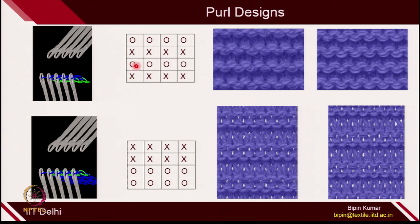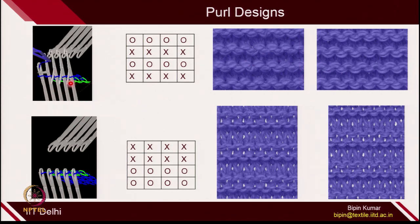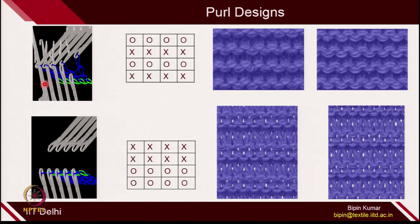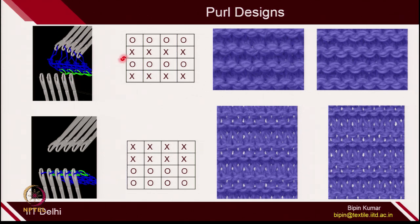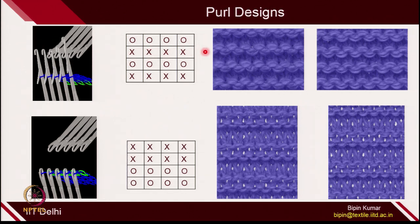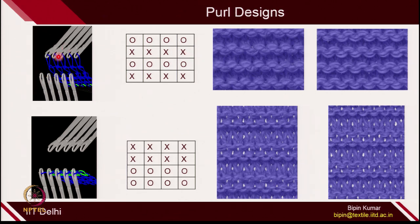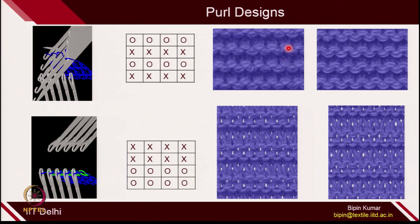In 1×1 pearl: one technical front course, then the next course technical back loops, then front loops, then back loops. So in the same column: front, back, front, back. If you look at the front side and back side, only heads and sinkers will be visible, so the architecture will be the same on both sides. If you see the animation, first this course is created on the front bed, then by loop transfer it is transferred to the back bed, and the back bed makes one course. Then the back bed transfers loops to the front bed for the next course.